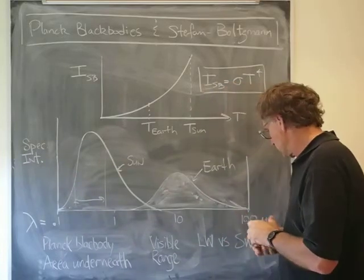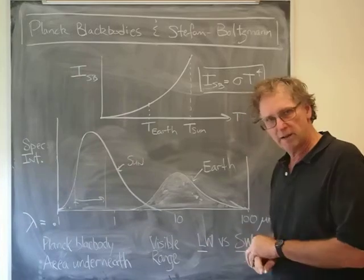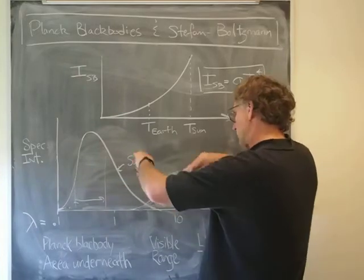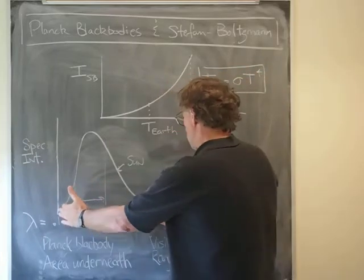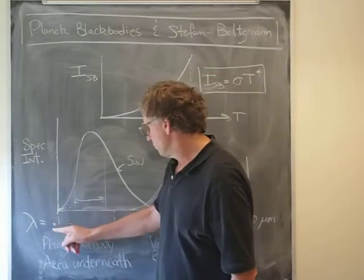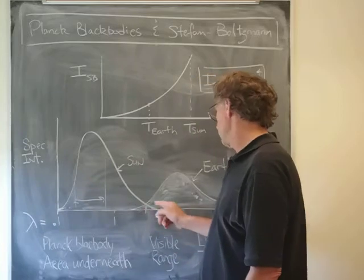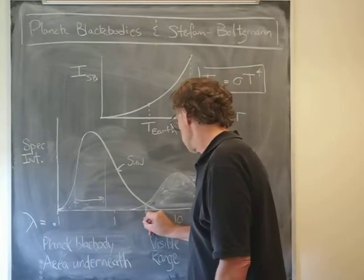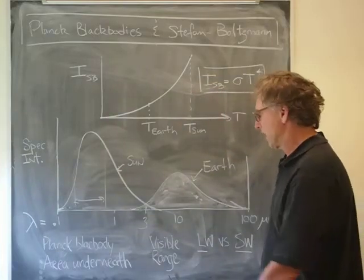It's very simple. We call shortwave to be more or less the range that the Sun emits in, which we're going to call from 0.1 micrometers out to somewhere around 3 microns—3 micrometers. So that's shortwave: 0.1 to 3 micrometers.